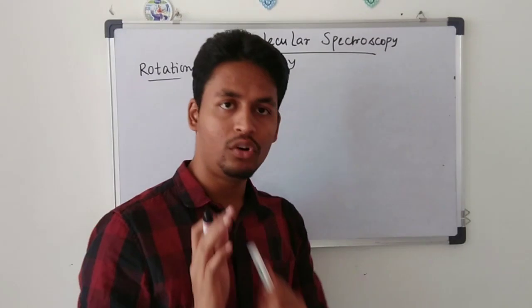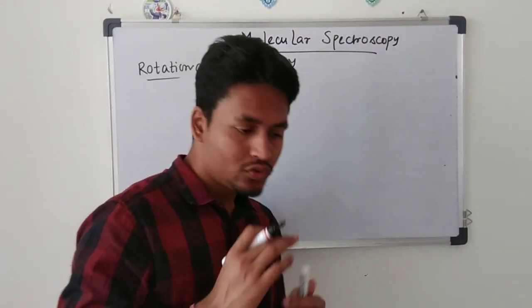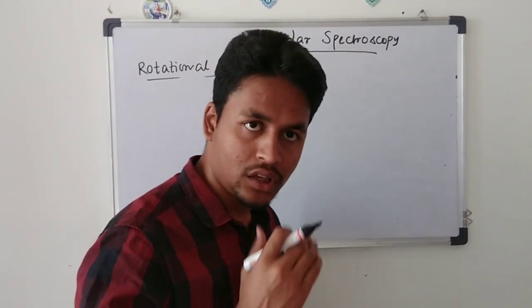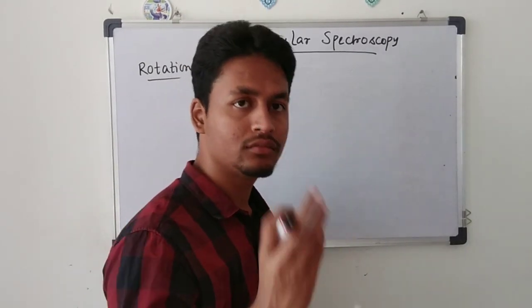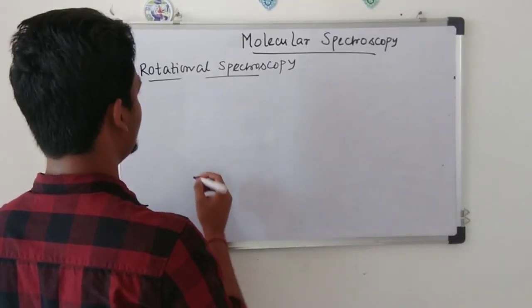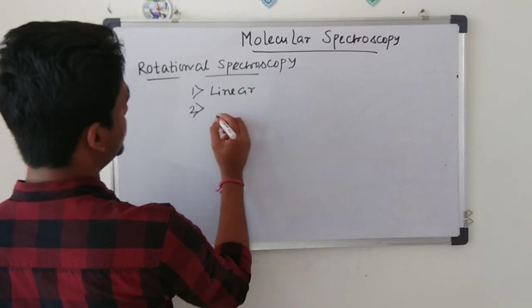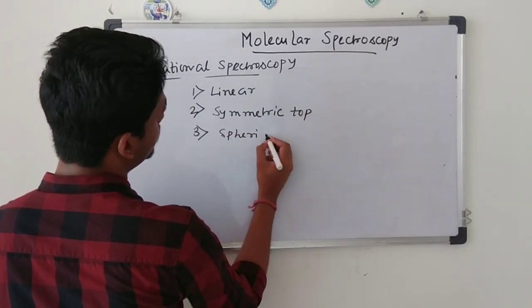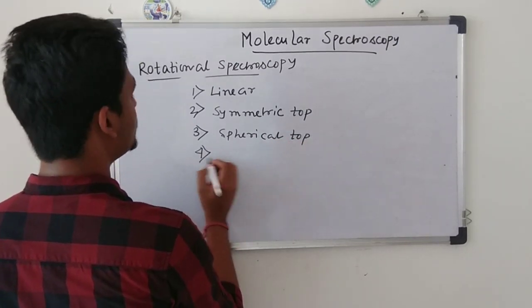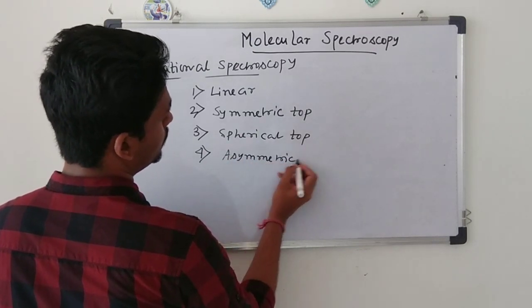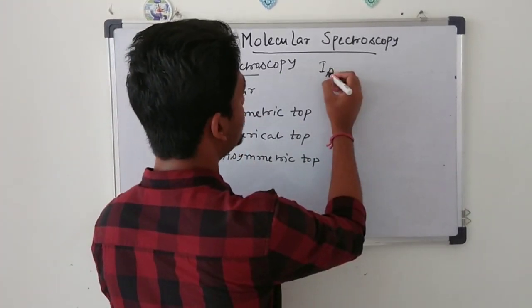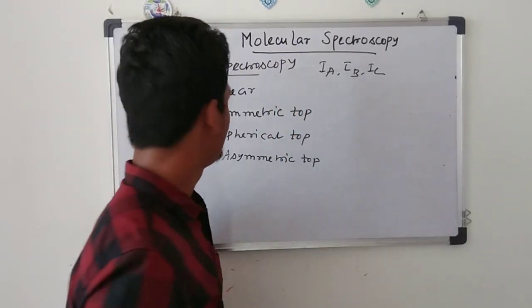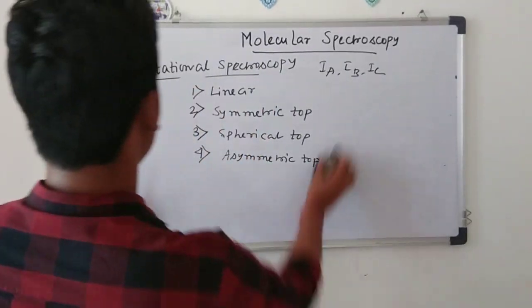Based on the values of IA, IB, and IC, molecules are classified into four categories: linear, symmetric top, spherical top, and asymmetric top.